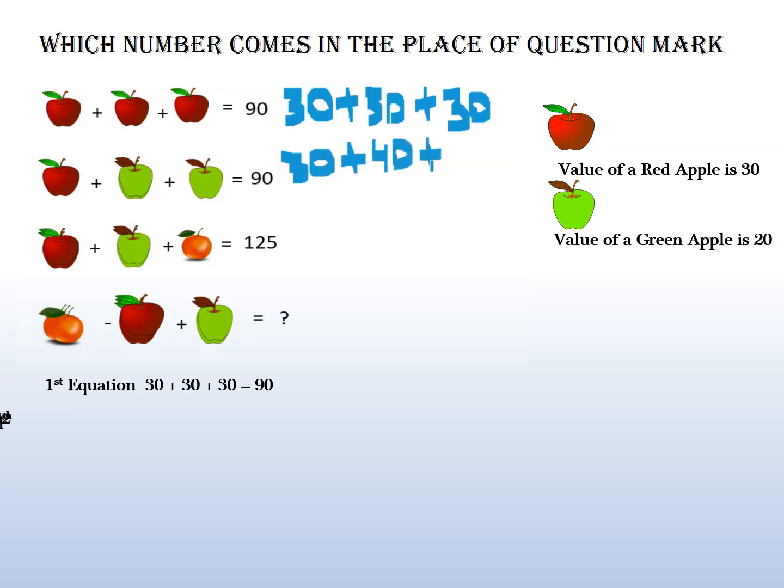So that's why, here in the second line, 1 red apple 30 plus 2 green apples, 20 plus 20 is 40, equals 70, then plus 20 is 90.